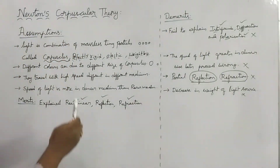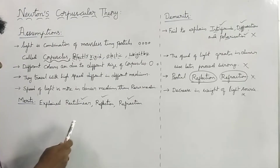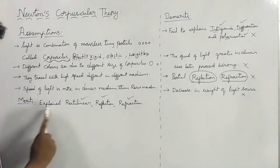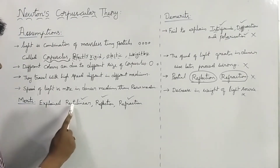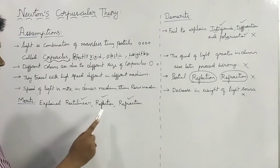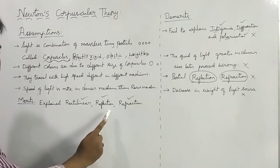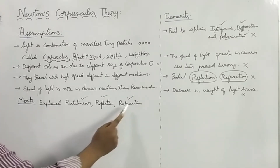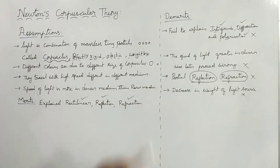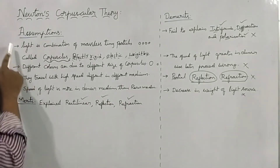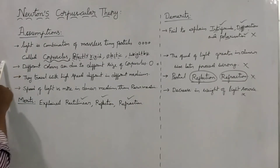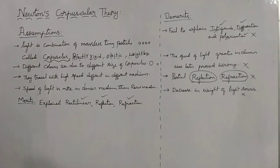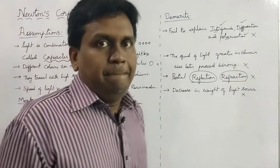Newton's corpuscular theory greatly explained rectilinear propagation of light, reflection of light, and refraction of light. And these are the assumptions made by Newton in his corpuscular theory.